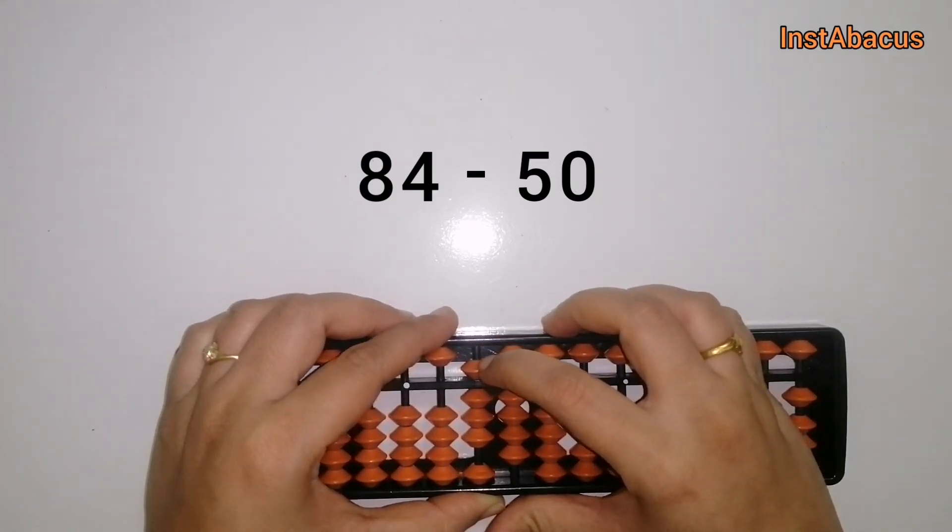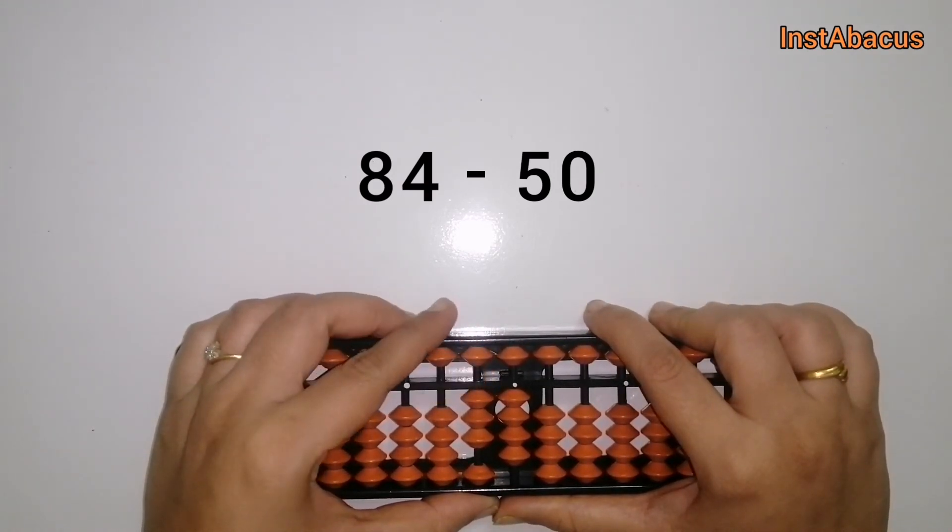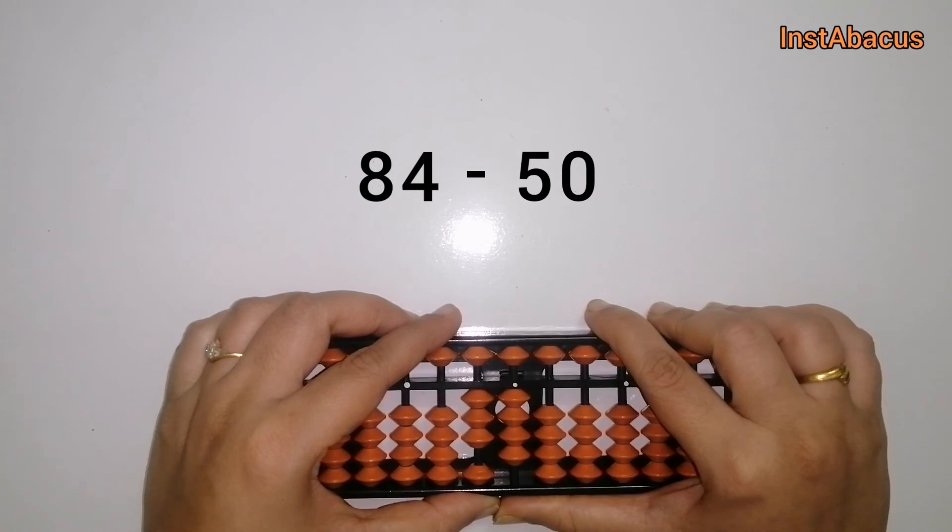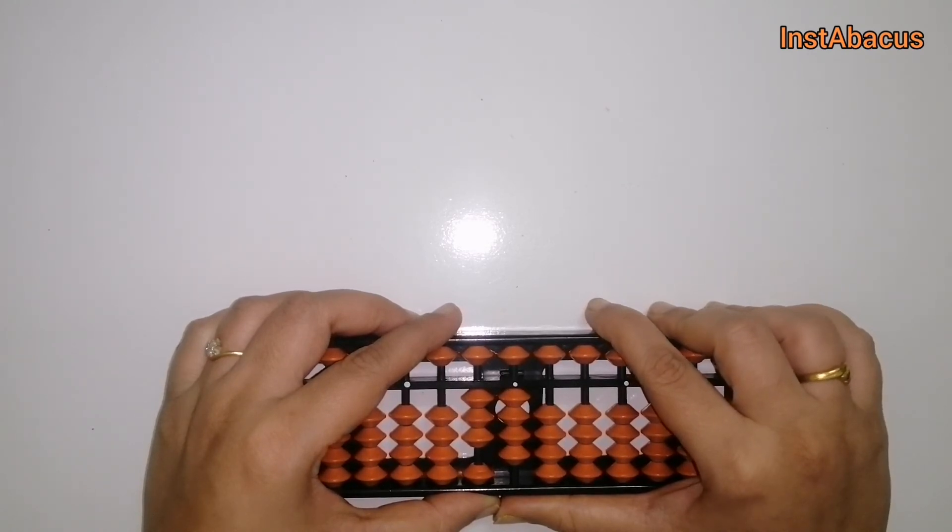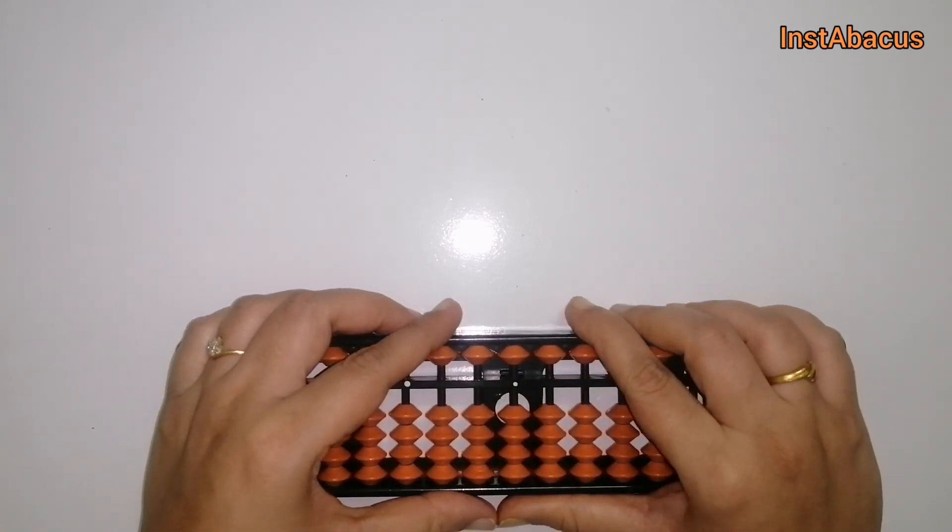There we go. So 84 minus 50, the answer is 34. That's correct. You are now becoming expert. Keep practicing and keep learning.